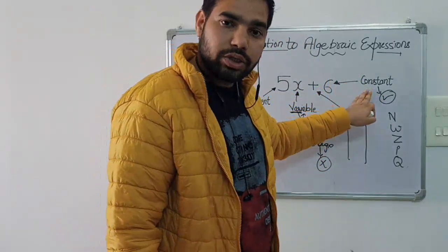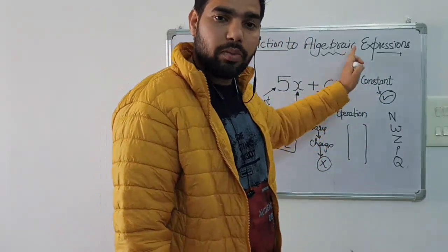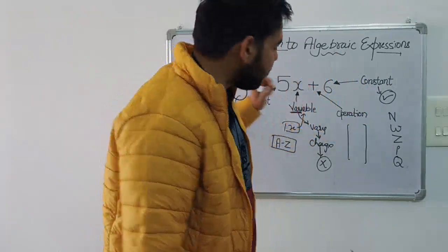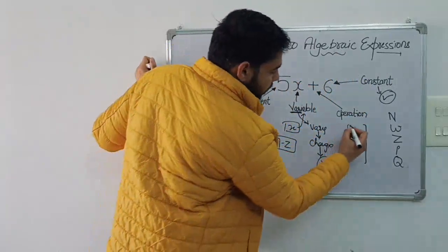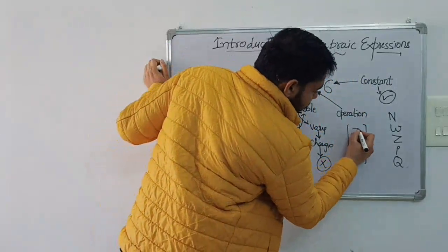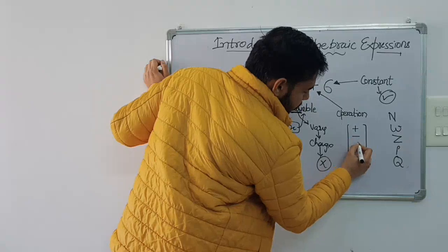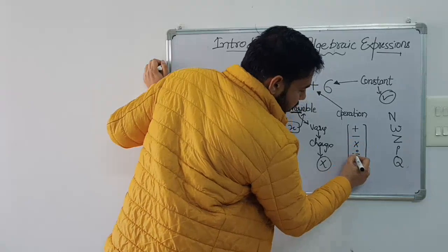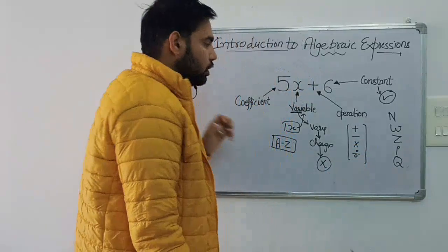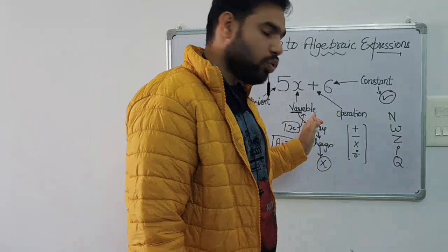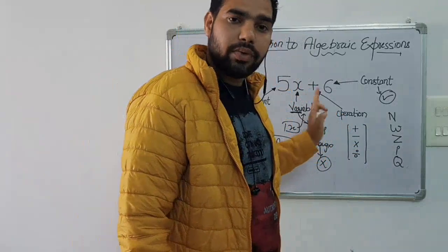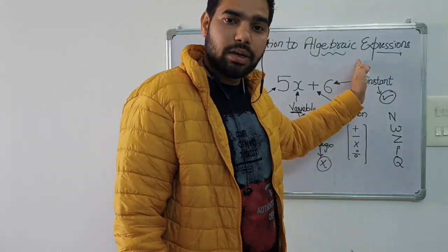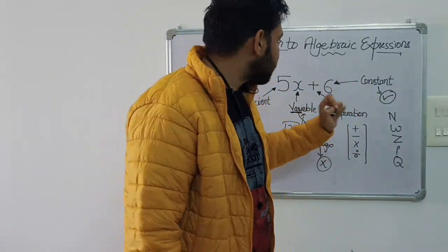Now, what is an operator? To form an algebraic expression, we need to combine a variable and a constant together. The four operations we use in mathematics are addition, subtraction, multiplication, and division. These four operations are used to combine a variable and a constant together to form an algebraic expression.